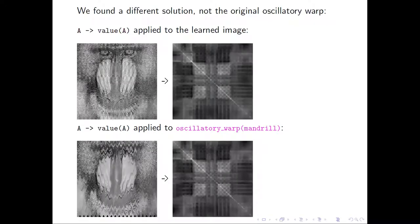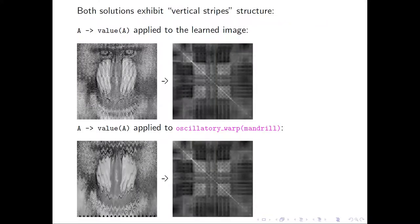And we find the solution, which is as good as the original oscillatory work, but different. Both solutions exhibit vertical stripe structure, which is responsible for the resulting grains in the product.